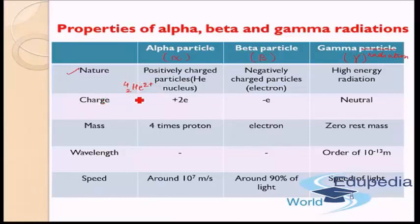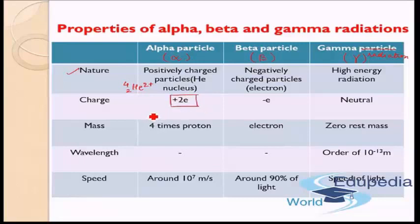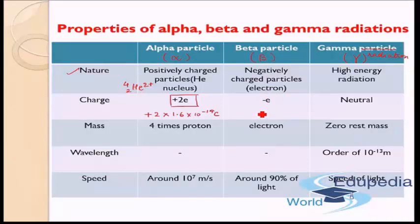As we saw, the alpha particle is a helium nucleus — a helium atom with two electrons removed. Since two electrons are removed, it gets a plus two charge: +2e, which means plus two times 1.6×10⁻¹⁹ coulombs. Beta particle on the other hand has a charge of minus e, since it is an electron: −1.6×10⁻¹⁹ coulombs. Gamma radiations, being electromagnetic radiation, do not have any charge — they are neutral.